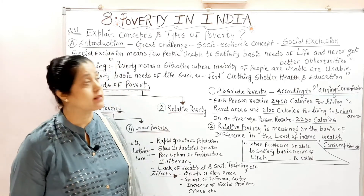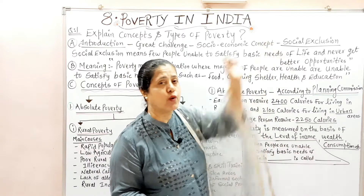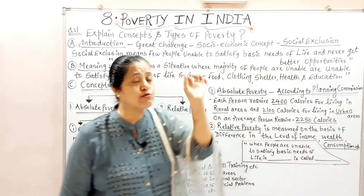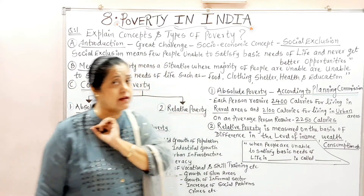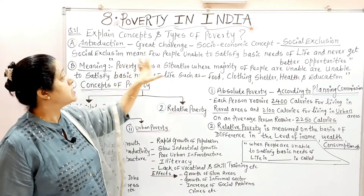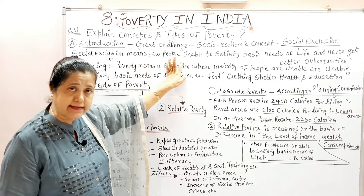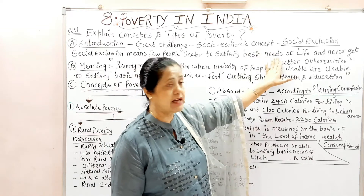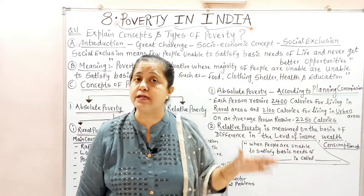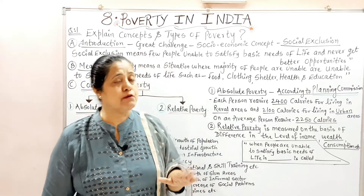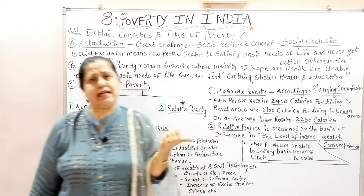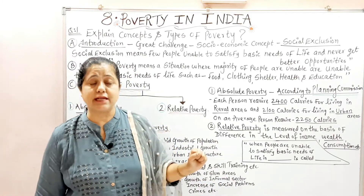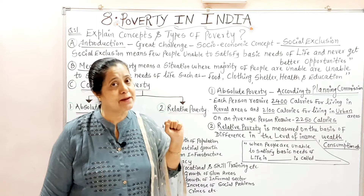Generally when we talk about poverty, we are concerned with one concept — that is social exclusion. Social exclusion means a few people who are unable to satisfy basic needs of life, and they never get better opportunities in their life. They are deprived from the basic needs — they could not fully satisfy their basic needs.